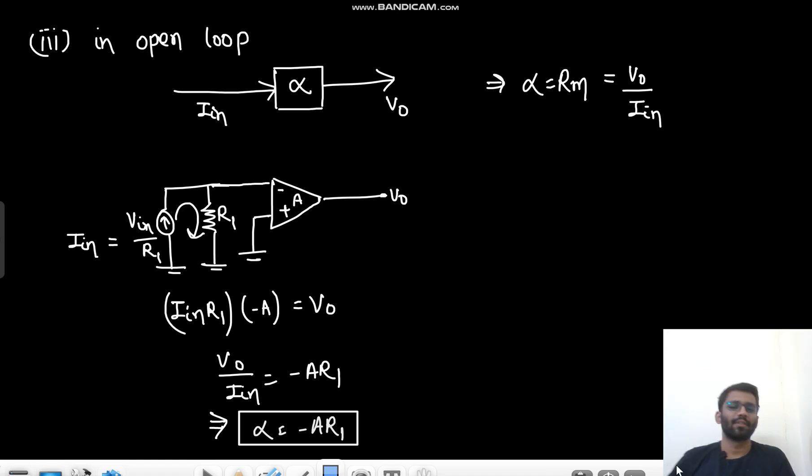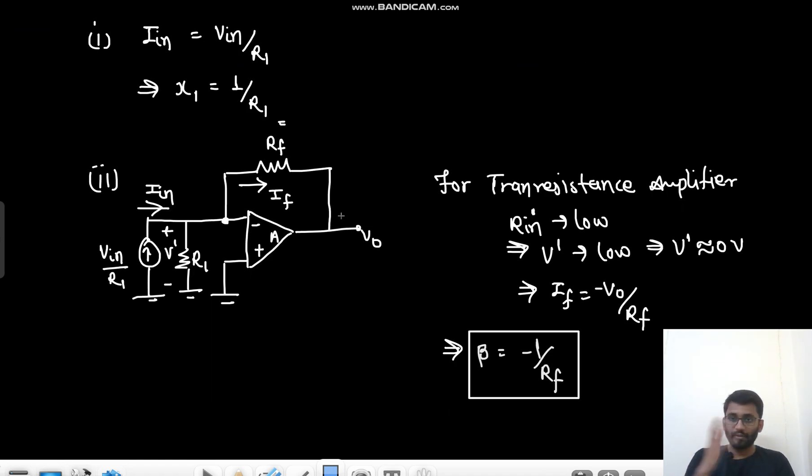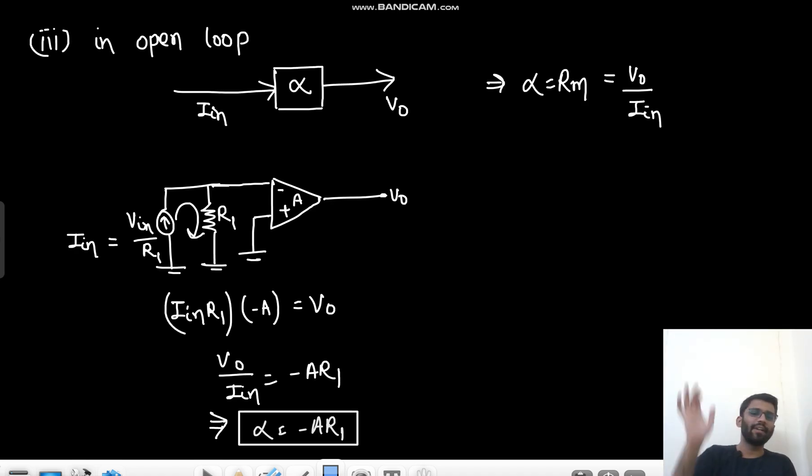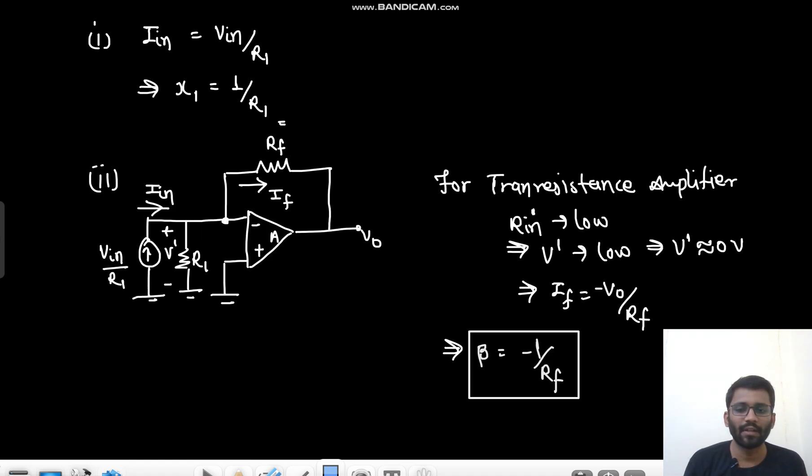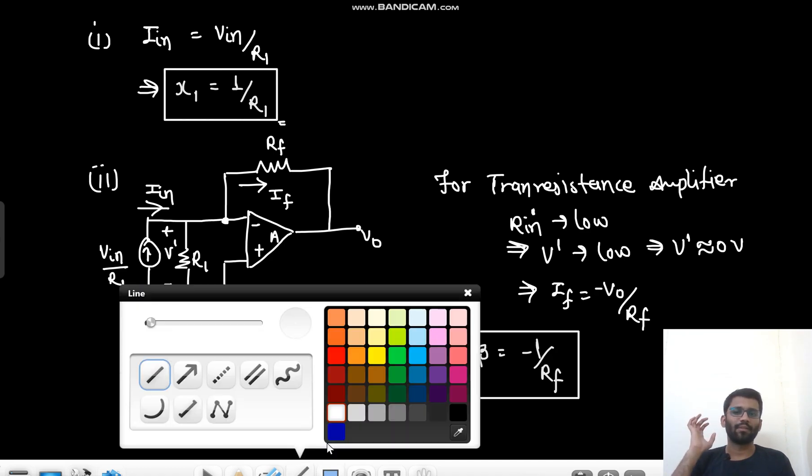So do you understand this question? Complete question. What did we do? First, we talked about the input. From there, we got X1 is 1 by R1. Then we talked about the feedback. Feedback is the current. So it is V0 by RF. If is negative, so minus V0 by RF. So your feedback is minus 1 by RF. To find the forward gain, we made it in open loop. In open loop, we have input current, R1 resistance, and then we find the relation that V0 by I in is equals to alpha. That is equals to Rm. So I in into R into minus A, V0 by I in is minus A R1. This is how we got the value alpha, beta, and X1. This is the complete analysis. So that's how they can ask you the questions. Now we can make the block diagram, comment on input automation by your own. Thank you.